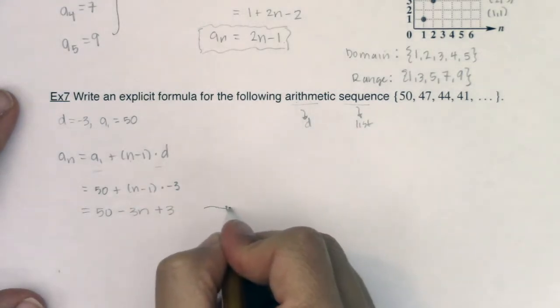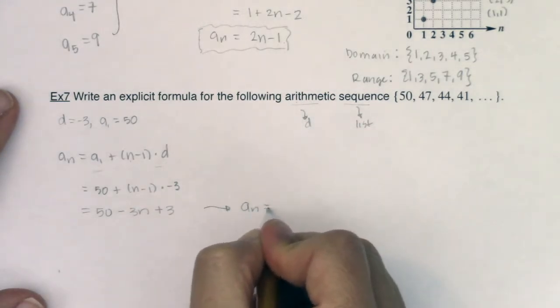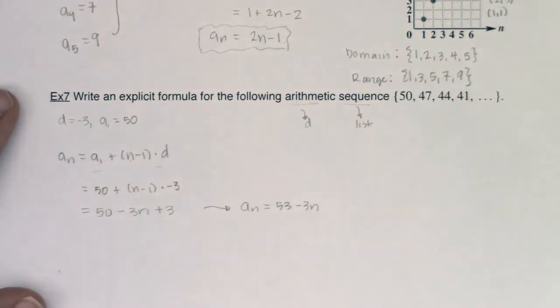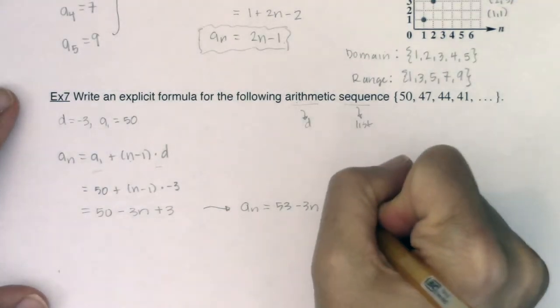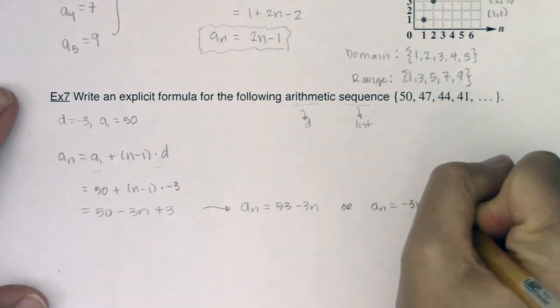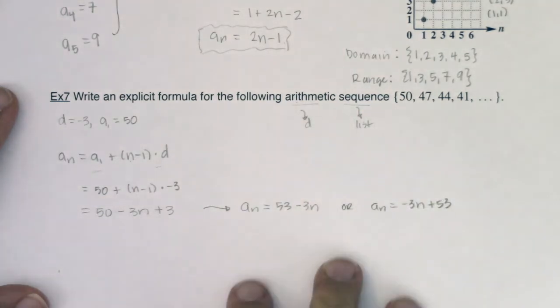So if I simplify this a little bit, I'm looking at a sub n being 53 minus 3n. Okay, or you could have written it the other way. You could have, if you prefer, write a sub n equaling negative 3n plus 53. Both of those are great.